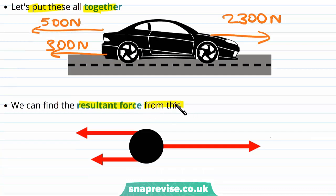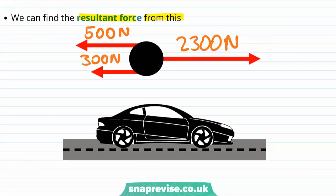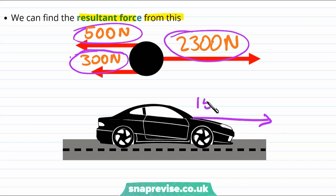Now we can calculate the resultant force from this. We start with our largest force and subtract the magnitude of the other two forces, since they act in the opposite direction. So the overall force is going to be 2300 newtons minus 500 and then also minus 300. So altogether, that's a resultant force of 1500 newtons.